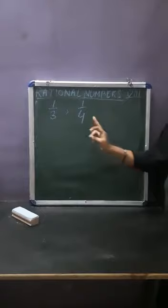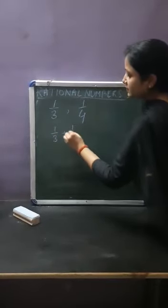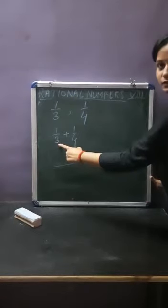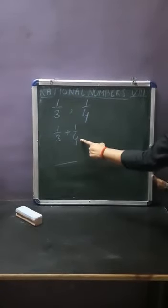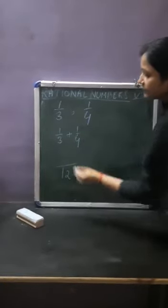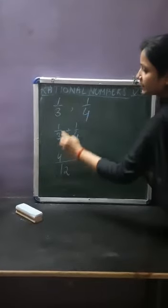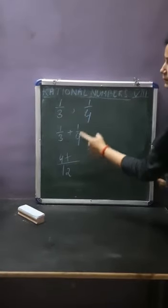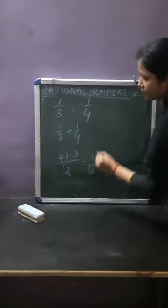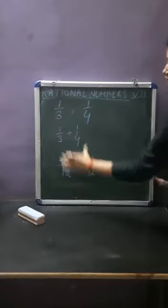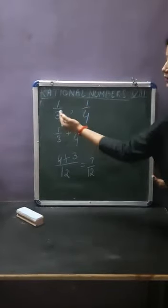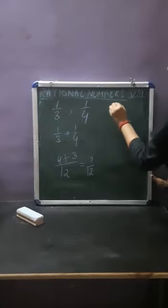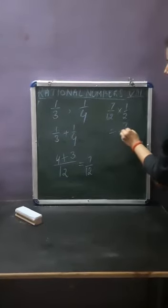So what you will be doing? You will add 1 upon 3 plus 1 upon 4. The value of the denominator is 3 and the value of the denominator is 4. LCM of 3 and 4 is 12. 12 divided by 3 is 4, multiplied by 1 gives 4. Plus 12 divided by 4 is 3, multiplied by 1 gives 3. So the sum is 7 upon 12. The number between 1 upon 3 and 1 upon 4 will be 7 upon 12 multiplied by 1 upon 2, which is 7 upon 24.